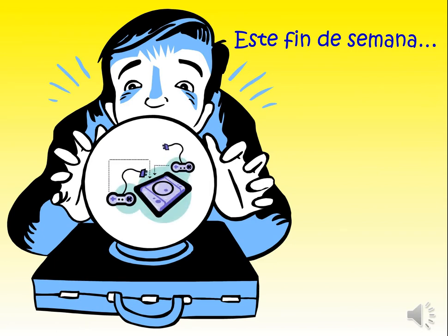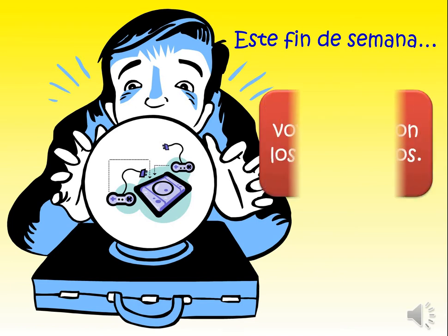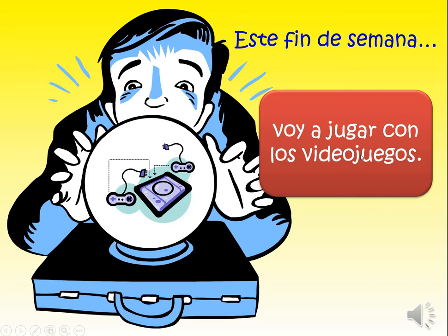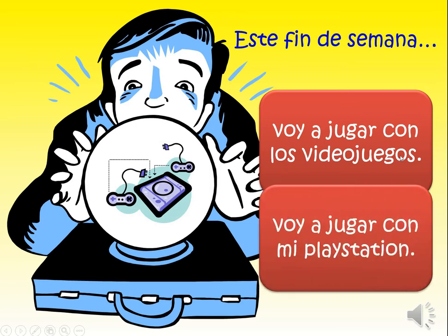Pause and write down 'I am going to play video games' - you'll need to go back to our free time work in your books to find that. The answer is 'voy a jugar con los videojuegos' - I'm going to play with video games. Or another way around it could be 'voy a jugar con' your PlayStation, Xbox, whatever it is.